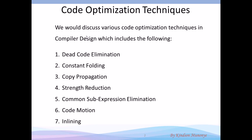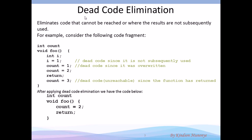Let's go right into the first one: dead code elimination. It has to do with eliminating code that cannot be reached, or where the result of an expression is not subsequently used in the code. Now take a look at this function here. We have two variables, i and count. We have count being declared here, and inside this function, i is declared and assigned a value, but i is never used.